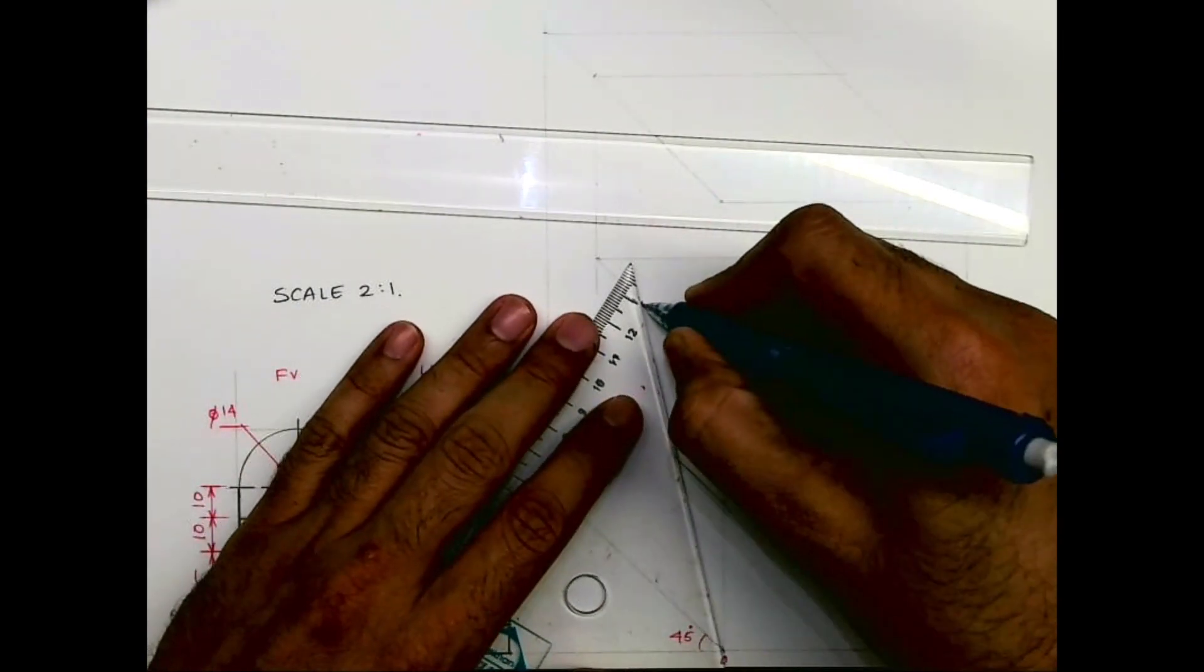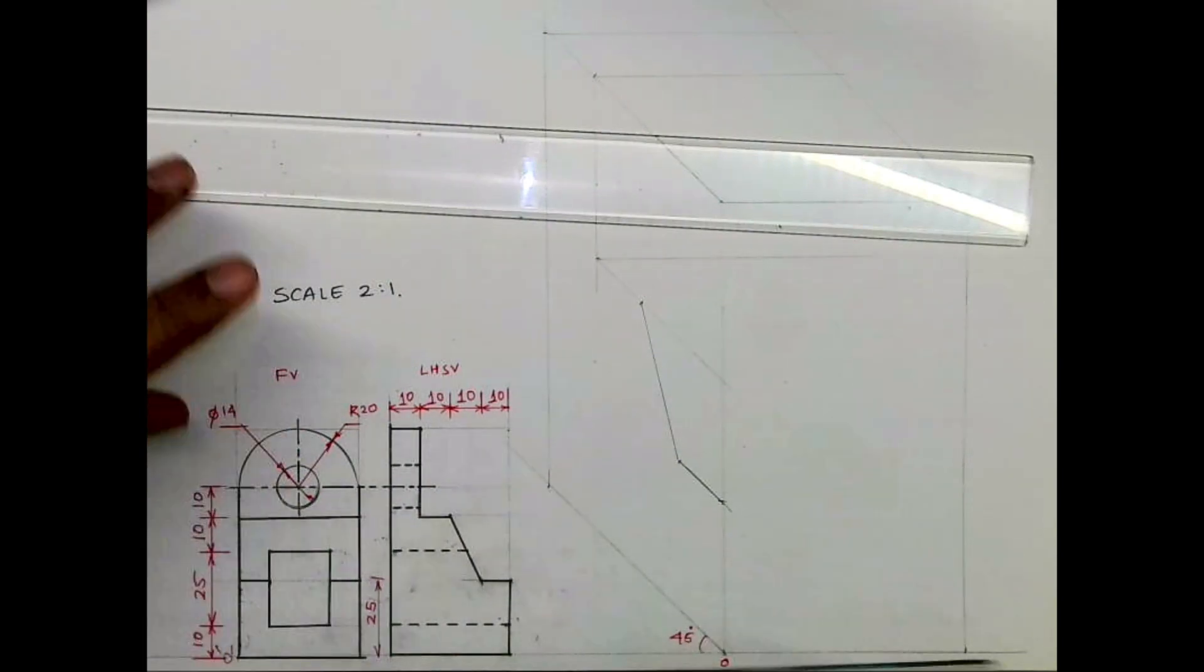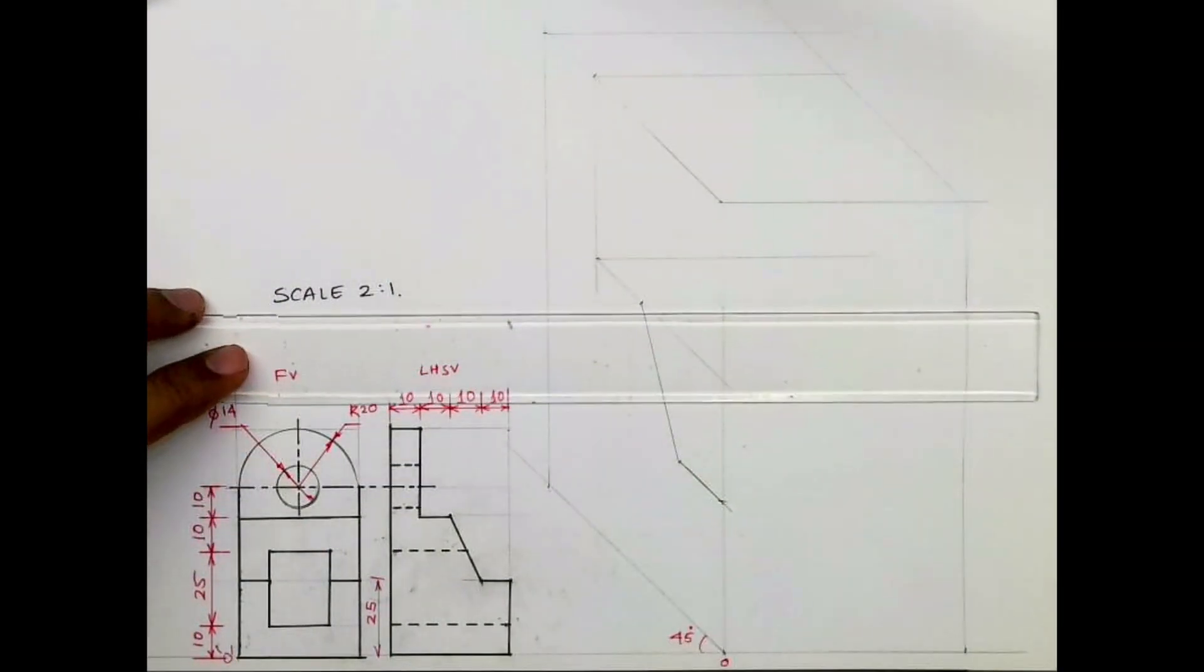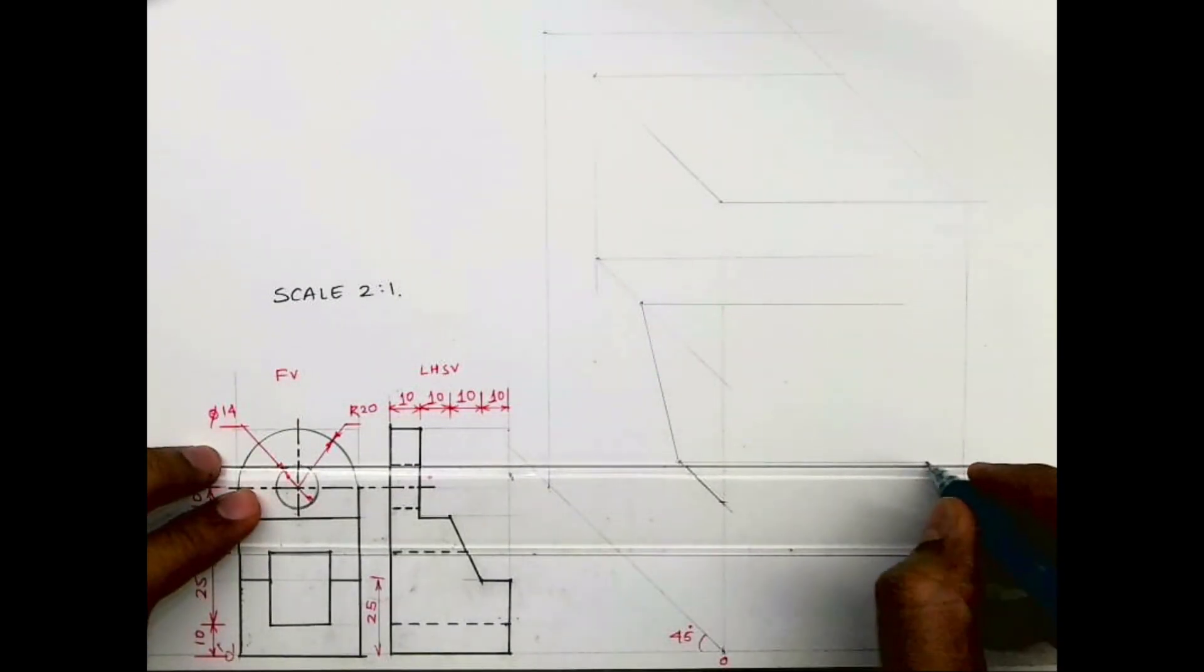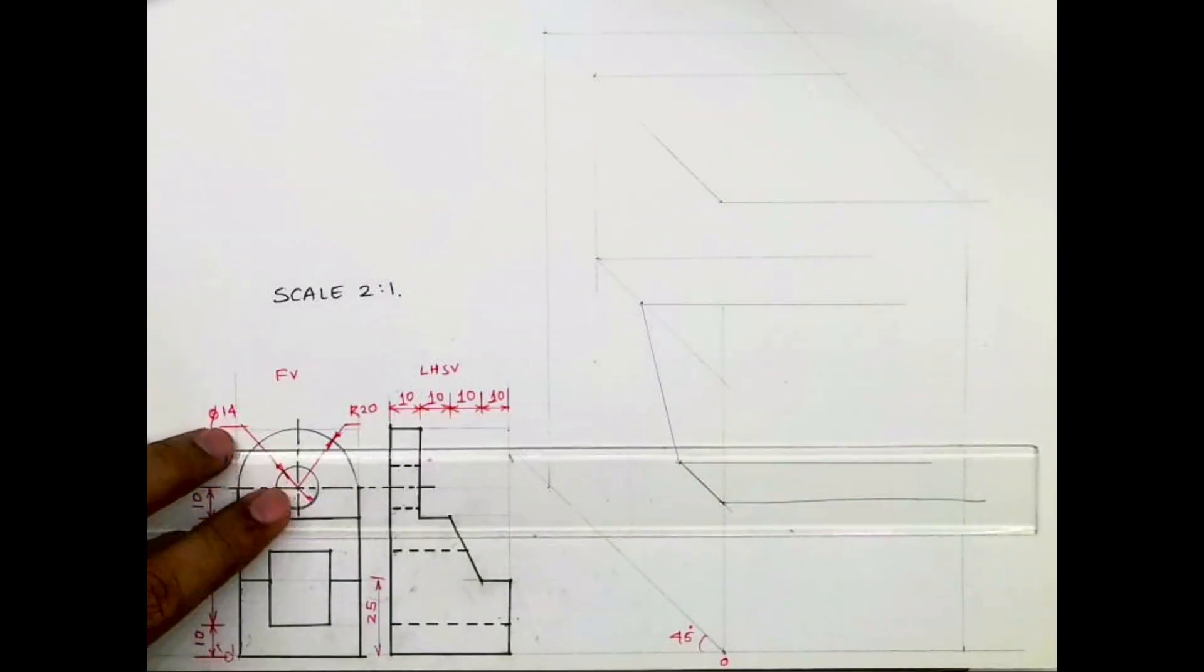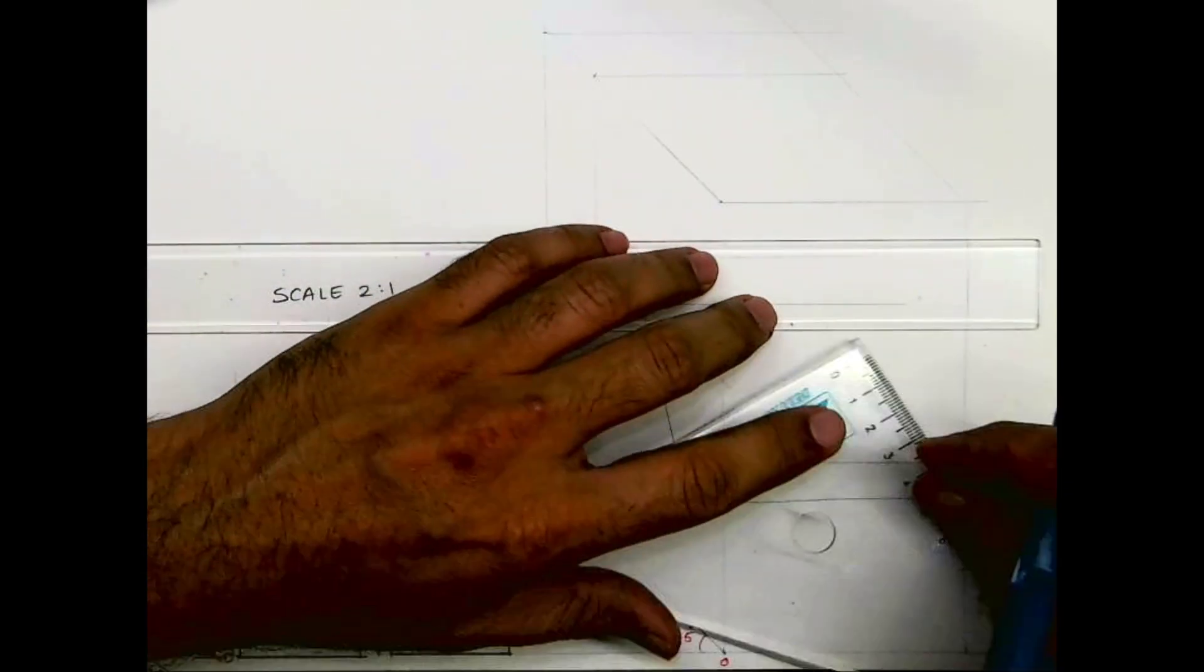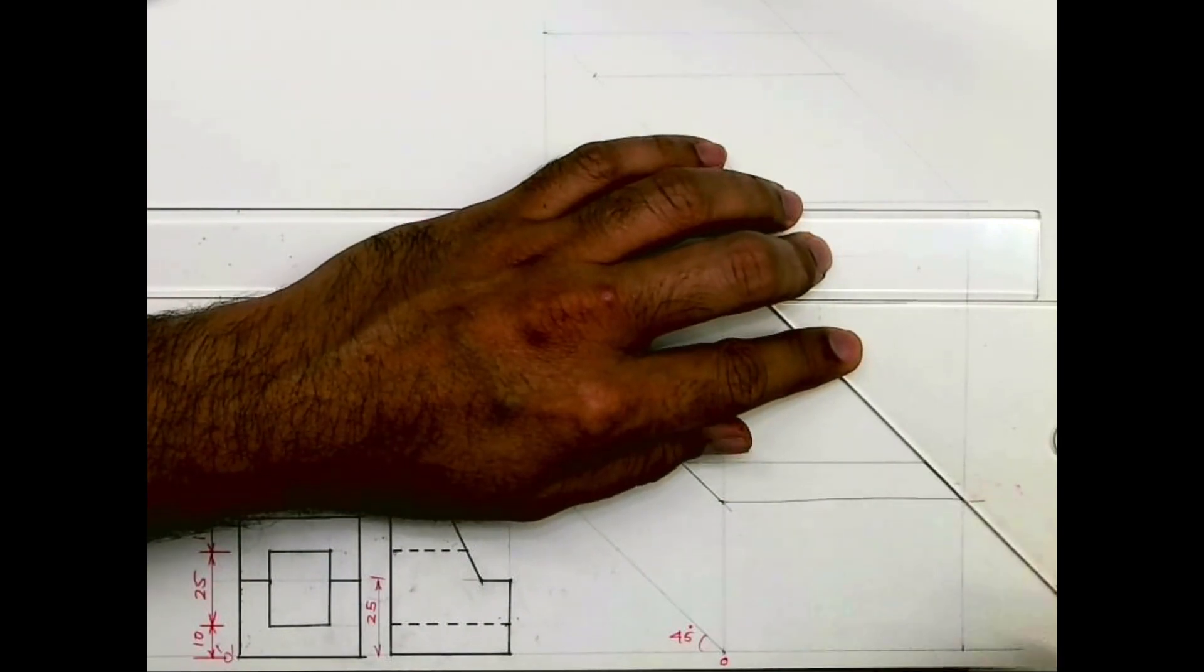And from here we'll draw this line. Then from here we'll draw a horizontal line, and from here also a horizontal line.